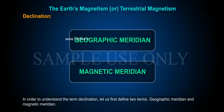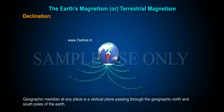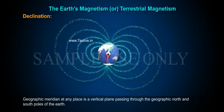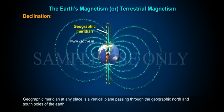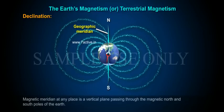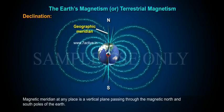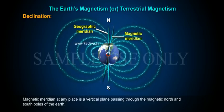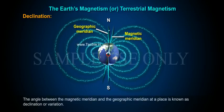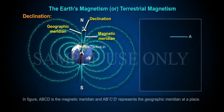Declination: in order to understand the term declination, let us first define two terms — geographic meridian and magnetic meridian. The geographic meridian at any place is a vertical plane passing through the geographic north and south poles of the earth. The magnetic meridian at any place is a vertical plane passing through the magnetic north and south poles of the earth.